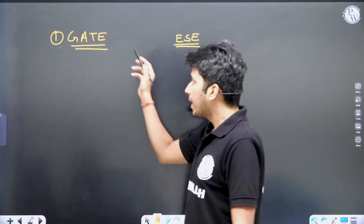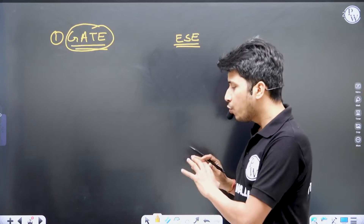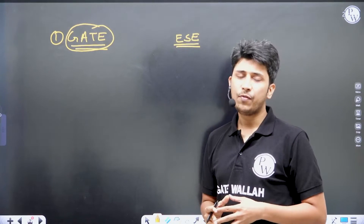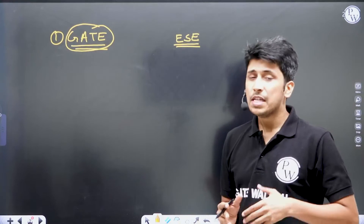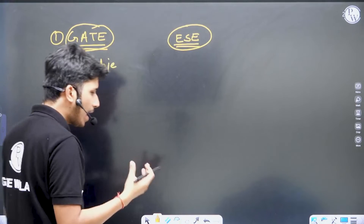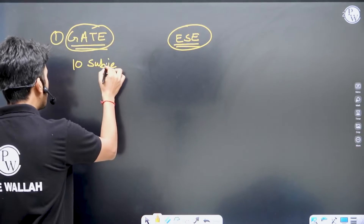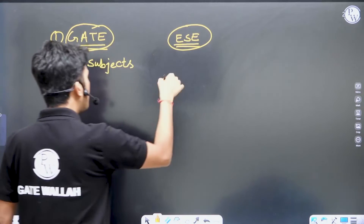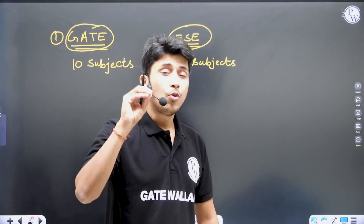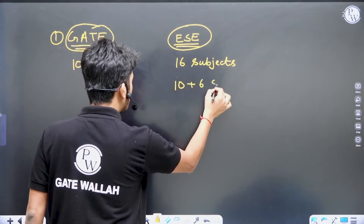GATE exam mainly requires in-depth knowledge for individual topics. Suppose you have around 10 topics in your branch for GATE and around 16 topics in ESC for your branch. Some branches have 12, 14, or 15-16 subjects in GATE, but as an example, if you have 10 subjects in GATE and 16 subjects in ESC, there is an important thing to understand.